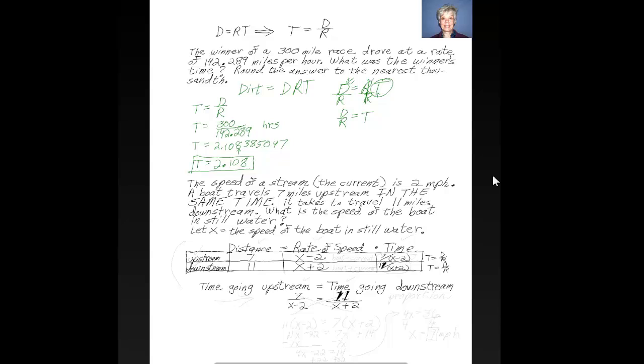The easiest way to do a distance-rate-time problem is to set up a table like this one, where you have distance, rate, time, upstream, and downstream. Then you just fill in your information. The rate upstream will always be the speed of the boat, minus the speed of the current. And the speed downstream, the rate of speed downstream, will always be the speed of the boat, plus the speed of the current.